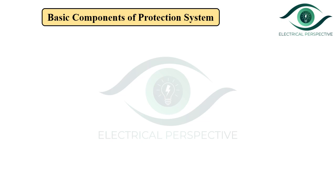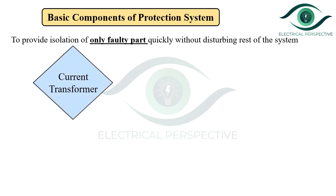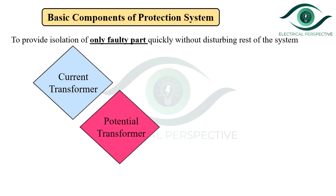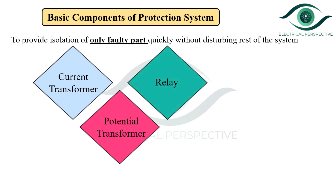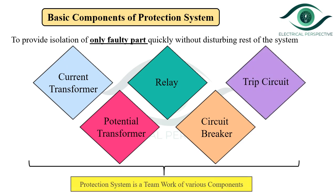When we say it is a system, it is the combination of various components. The basic objective is to provide the isolation of only the faulty part quickly without disturbing the rest of the system. It consists of current transformer, potential transformer, relay, circuit breaker, and trip circuit. So we can see that the protection system is a teamwork of various components.